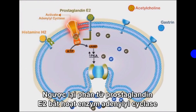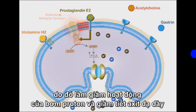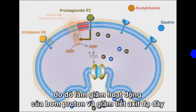Conversely, prostaglandin E2 molecules inactivate adenylyl cyclase enzyme. Thus, it decreases the proton pump activity and gastric acid secretion.